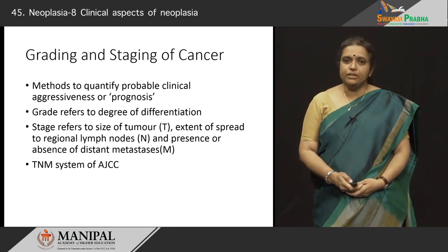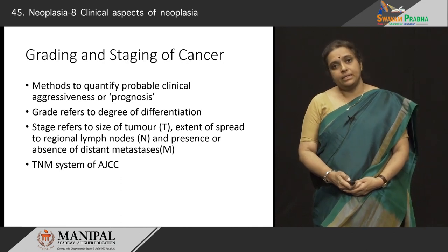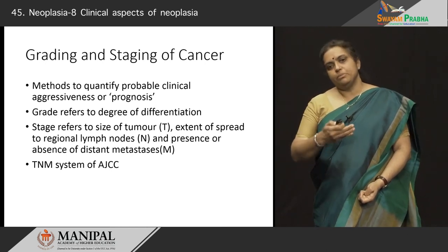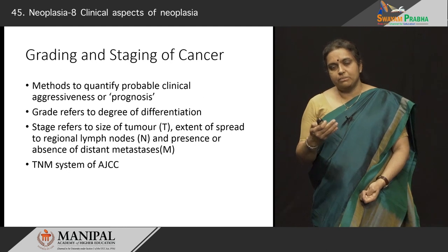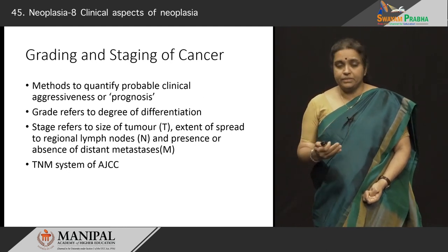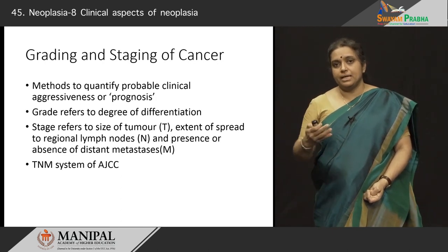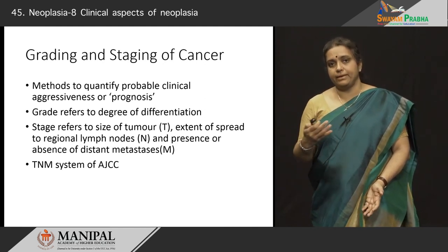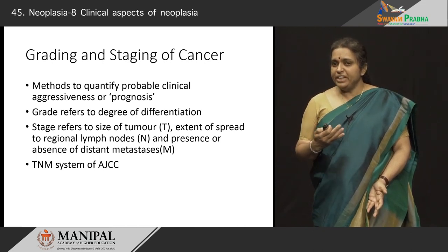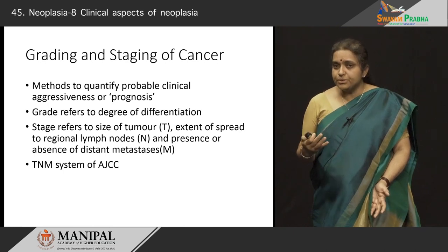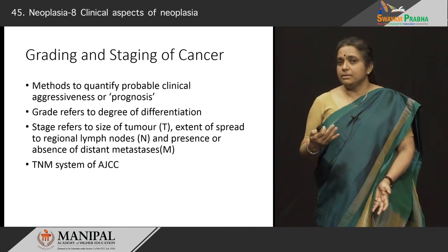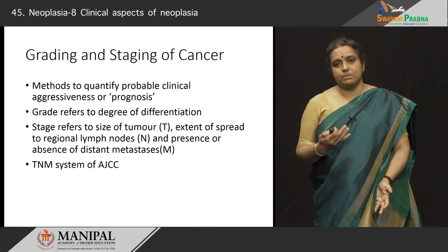Grade usually refers to the degree of differentiation within a cancer and is supplied by the pathologist. By grade, we mean how close do the cancer cells look to the original tissue. For example, a well-differentiated squamous cell carcinoma of the lung has all the defined features of squamous cells — keratin pearls and so on. If the cells look very undifferentiated and you have to struggle to identify them as squamous cells, then the grade is higher and it is called a poorly differentiated squamous cell carcinoma.